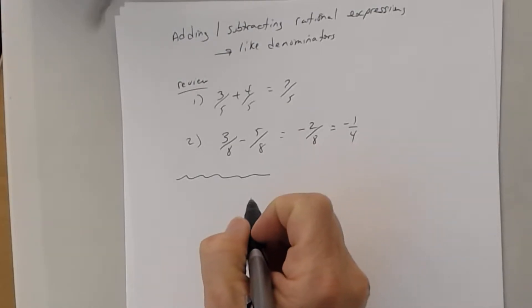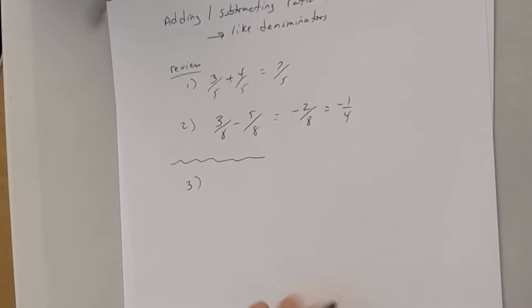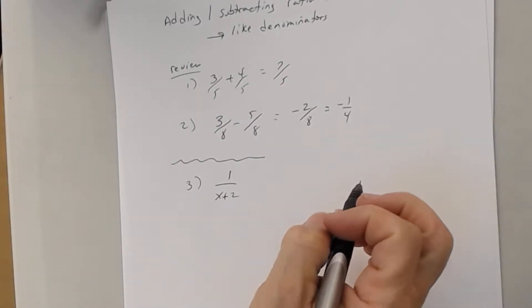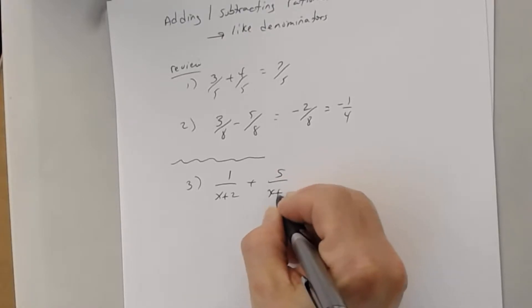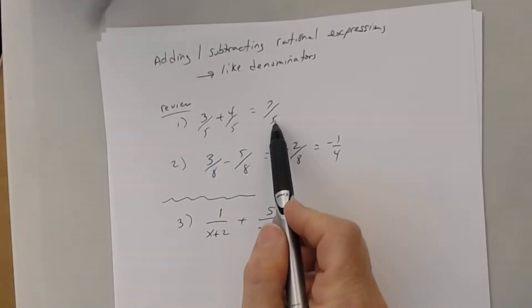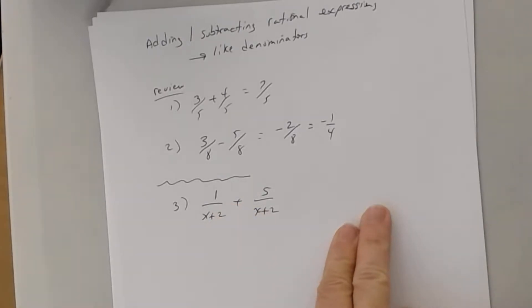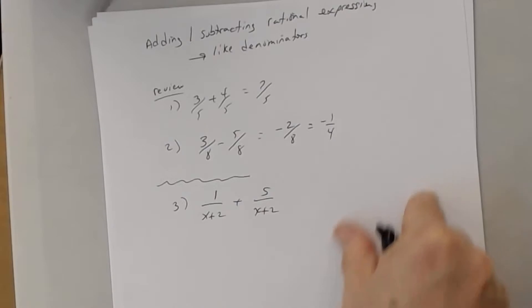Now we're going to deal with fractions that involve variables. We're going to look at an easy one to begin with - number 3. Suppose I had this rational expression: 1 divided by x plus 2. The denominator is x plus 2, a variable expression. I'm adding another rational expression, and I want to condense this into just one rational expression - just like adding two fractions gives one fraction.